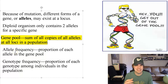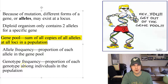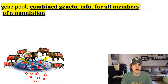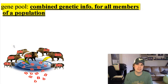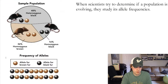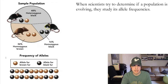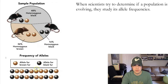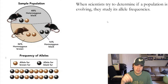Allele frequency is a proportion of each allele in the gene pool. Genotype frequency is the proportion of each genotype. The gene pool is the combined genetic information for all members of a population. For example, in the mouse population in your book — homozygous brown, homozygous black, and heterozygous — you can see that brown alleles outnumber black alleles. When scientists try to determine if a population is evolving, they look at allele frequencies.